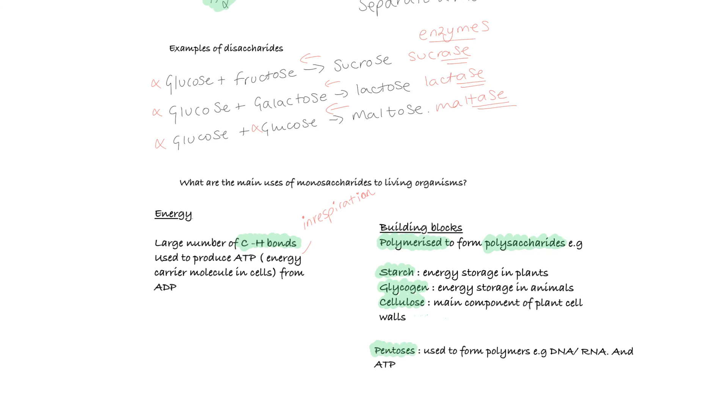In this video, we've looked at a few key things you need to learn. We have looked at the structure of both alpha and beta glucose. We have looked at how you form a disaccharide from two monosaccharides. We have learned the terms condensation reaction and hydrolysis reaction, as well as the term glycosidic bond, which is the name of the bond formed between two sugars. We've also looked at examples of disaccharides, and we have looked at the main uses of disaccharides in living organisms. I hope you found it useful. Well done.